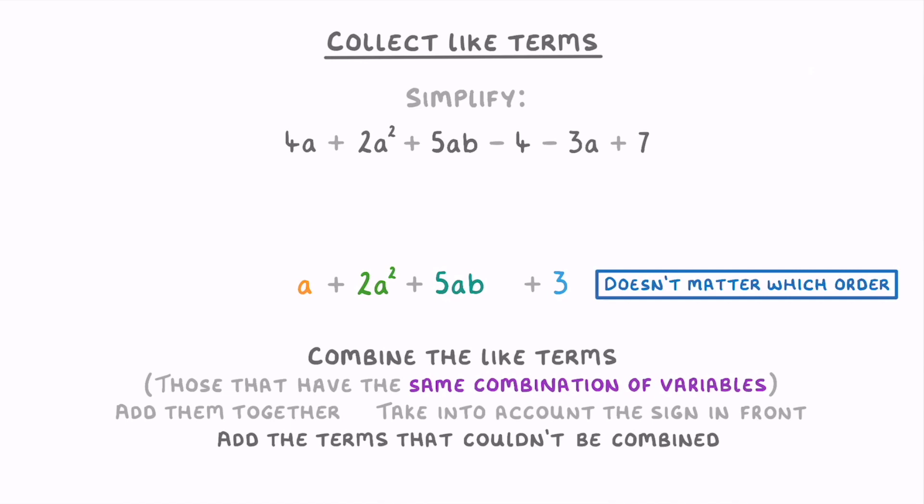And remember with algebra, it doesn't matter which order you put them in. So you could have written it as 2a squared plus 3 plus 5ab plus a, or any other combination that you could think of, as long as you have these four terms being added together.